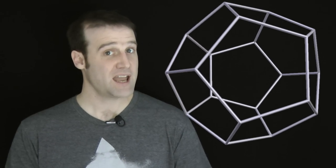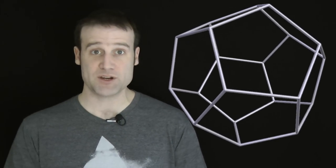Number three, the octahedron, also made of identical equilateral triangles, but this time joined four to a vertex. Number four, the dodecahedron, made of 12 identical regular pentagons, joined three to a vertex.